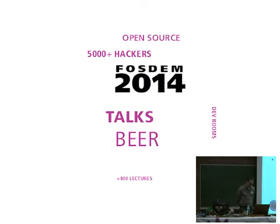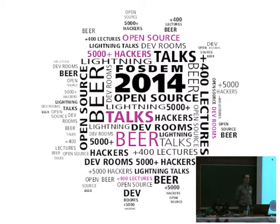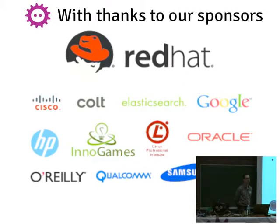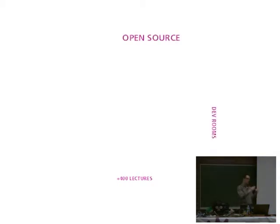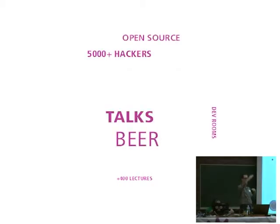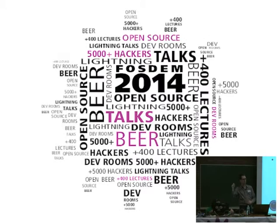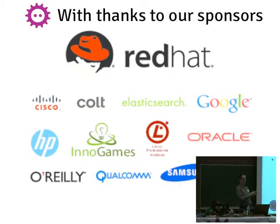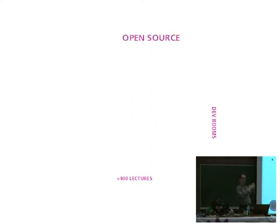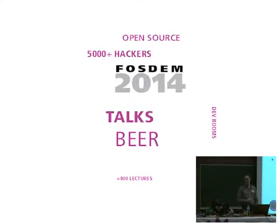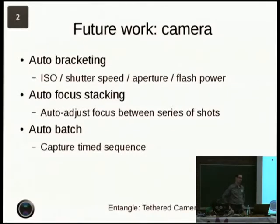Another plug-in I'd like to write to help in the macro world is something to do focus stacking. This is an idea where you take a series of macro images and tune the focus points to a different focal distance between each shot, and then you can combine all these images in GIMP afterwards to create one which has a really wide depth of field that you wouldn't be able to get with a single shot.